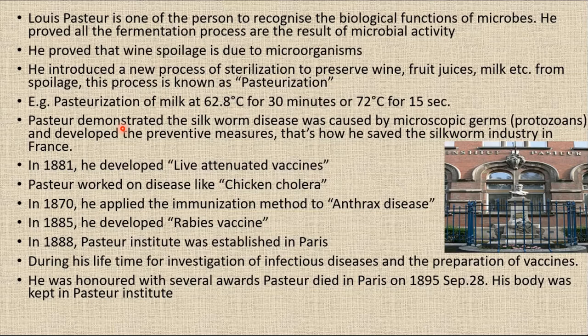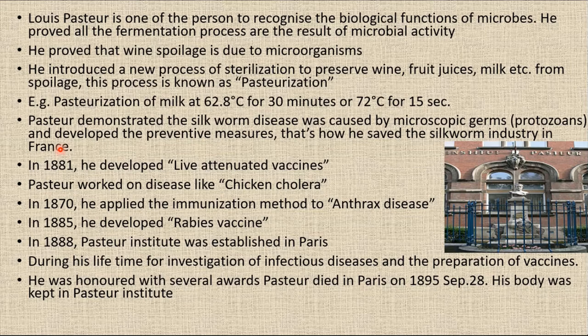Pasteur demonstrated that silkworm disease was caused by microscopic germs — specifically protozoans — and developed preventive measures, thus saving the silkworm industry in France. In 1865, while Pasteur was asked to find the cause of pebrine, a disease affecting silkworms, he demonstrated that the disease was caused by protozoans. By choosing microbe-free eggs for breeding, the disease could be controlled. This was a significant step towards the establishment of the germ theory of disease.